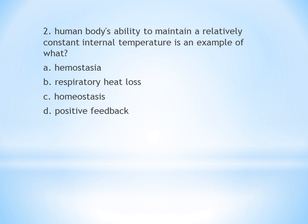Hemostasis versus homeostasis: hemostasis — hemo is blood, stasis is control or stop — so hemostasis means controlling of bleeding. Homeostasis is the human body's ability to maintain a constant temperature. So the answer is C, homeostasis.